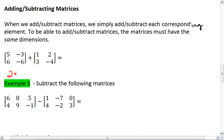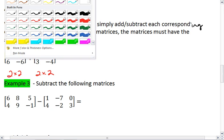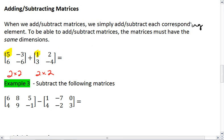So here we have a 2 by 2 and a 2 by 2 matrix, so that checks out. We then look at all the corresponding elements. 5 corresponds to 1, negative 3 corresponds with 2, 6 with 3, and negative 6 with negative 4. Our resulting matrix will also be a 2 by 2.